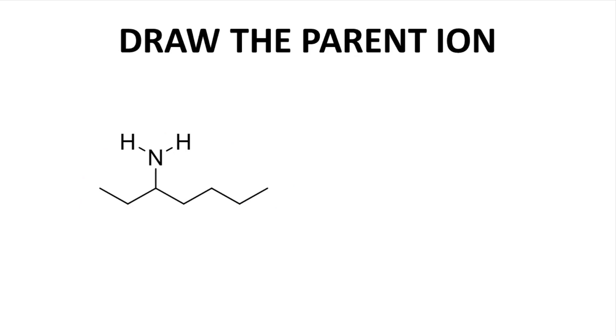In a mass spectrometer, we would likely lose an electron in the lone pair to give this parent ion. It has an Mz value of 115.